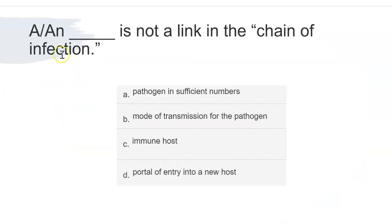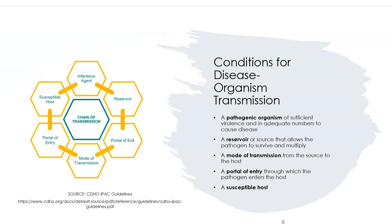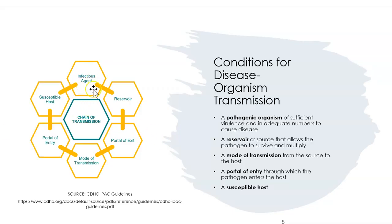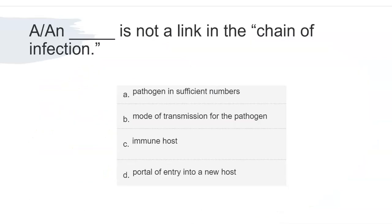Question: A blank is not a link in the chain of infection. A: pathogen in sufficient numbers; B: mode of transmission; C: immune host; or D: portal of entry into a new host? A pathogen in sufficient numbers refers to the infectious agent — a disease-causing bacteria, virus, or parasite — and you need one to get sick. Mode of transmission is how germs get transmitted — through touching or droplets. Portal of entry is how germs enter the body. So all of those are links.